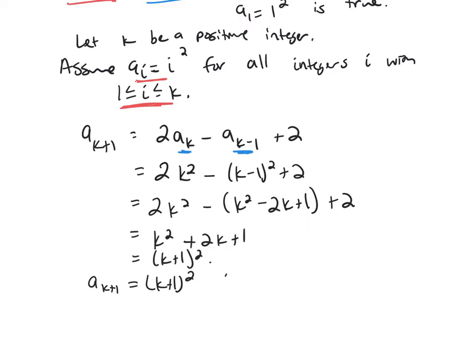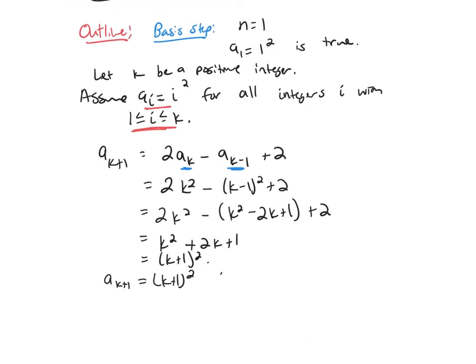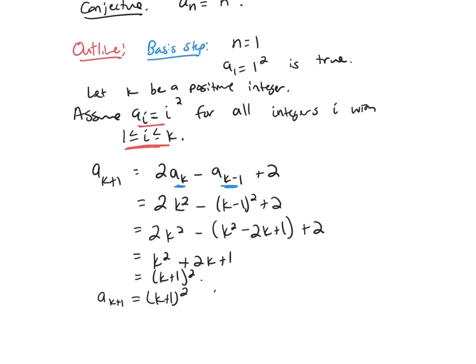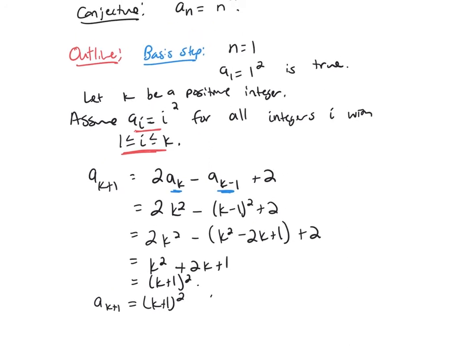So all you need to do now that we've outlined this proof is write it formally with sentences. I'll leave that to you because we've done most of the work already. So in this problem, it was a little bit different than our previous one because we didn't have a formula for a_n to begin with. We had to find that by noticing a pattern amongst all of our terms in our sequence.